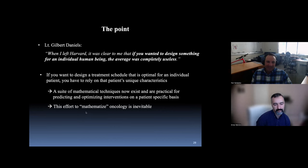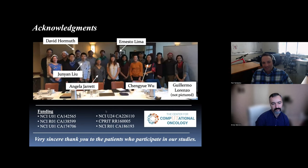So the thing is that this guy, Gilbert Daniels at the very end of his study for the pilots, he said, when I left Harvard, it was clear to me that if you wanted to design something for an individual human, the average was completely useless, perhaps being overdramatic there, but there's a lot of truth to it. And so we might say, if you just want to design a treatment schedule that's optimal for an individual, you got to rely on their individual characteristics. And now we believe there's a suite of mathematical techniques that are practical for doing this kind of thing on a patient-specific basis. And then, like I said, a couple of times that this is probably inevitable. If you look at the history of science, once we mathematize something, we get pretty good at it. And these are the people who do the work. Thank you very much, Tom. That was absolutely amazing. And thank you for all the amazing efforts that you're leading. I think that the future is very bright. Computational oncology is really making a difference in healthcare and patient lives. And thank you for being a leader in this space.